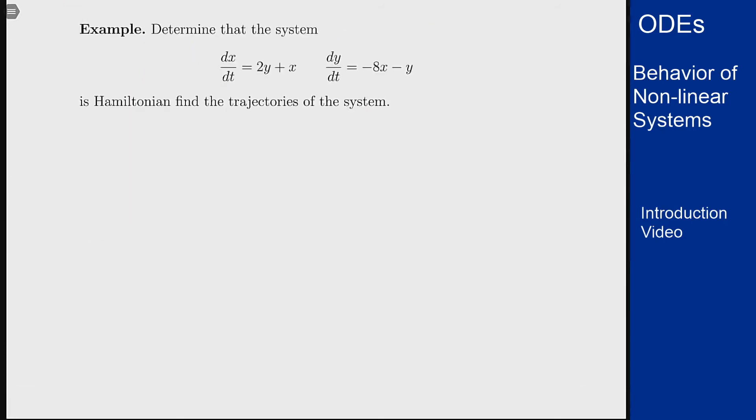Now for example, I want to determine if this is Hamiltonian and find its trajectories. So what do we have here? Well, if I look at f_x plus g_y, that's my check for Hamiltonian, I get one minus one is zero. Great, so it's Hamiltonian.